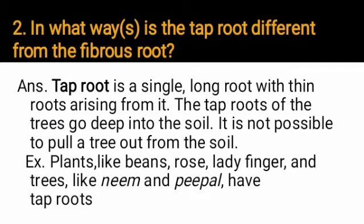Tap root is a single long root with thin roots arising from it. It goes deep into the soil, and it is not possible to easily pull a tree with a tap root out of the soil. Examples of plants with tap roots are beans, rose, neem, and peepal.